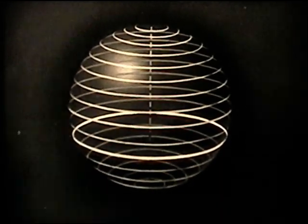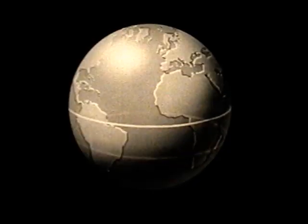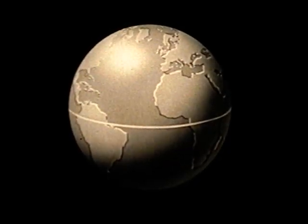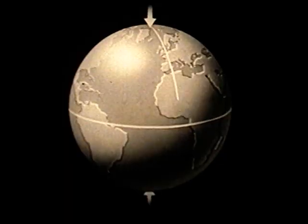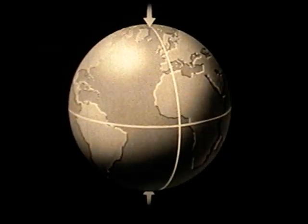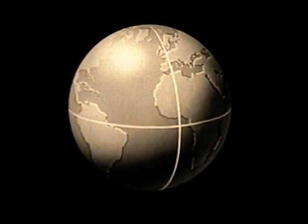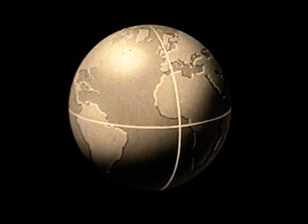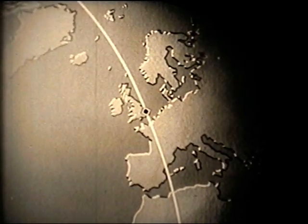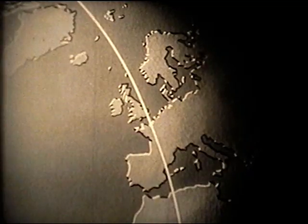So longitude is used. Any line which joins the poles and is drawn at right angles to the equator could be used. As a standard, most countries use the line which passes through the Royal Observatory at Greenwich. This is called the Greenwich Meridian.